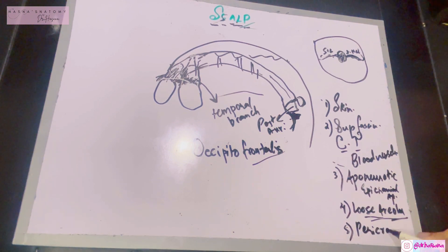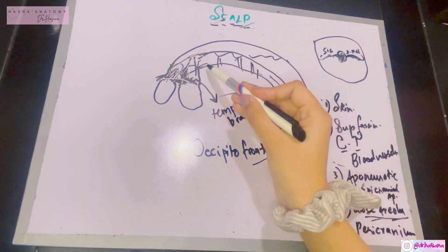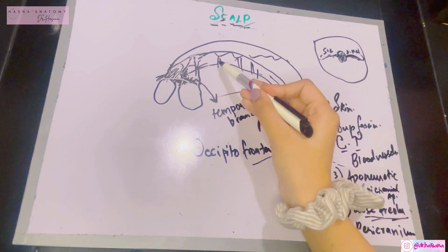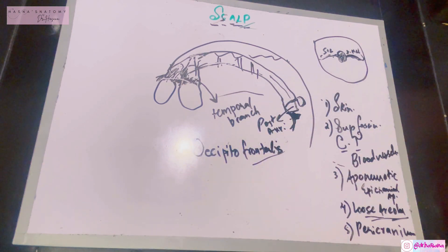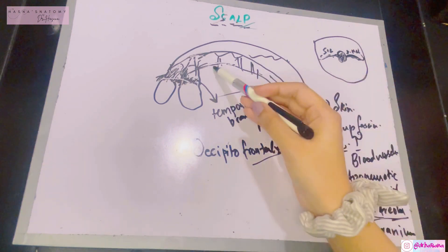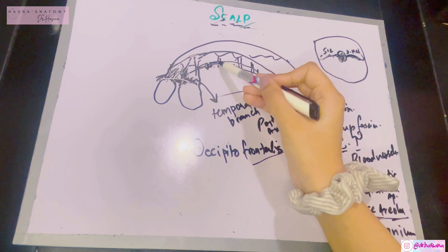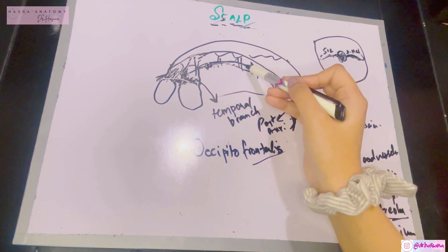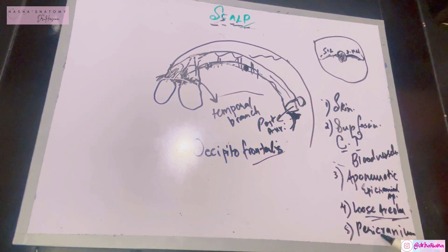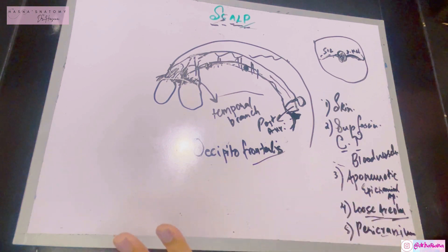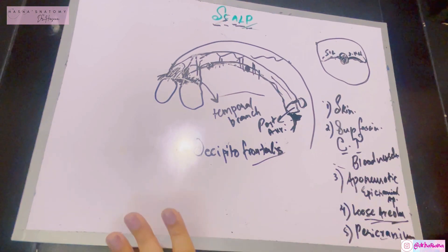The final layer — P — is the Pericranium, the periosteum of the skull. It is very closely attached to the sutures but loosely attached to the bones themselves. The pericranium is firmly adherent at the sutures. These are all the layers of the scalp — S, C, A, L, P.